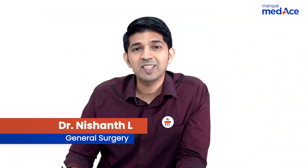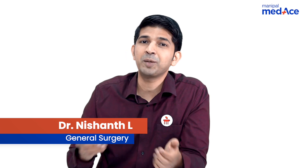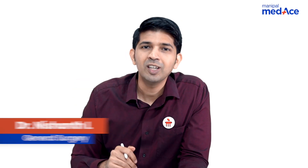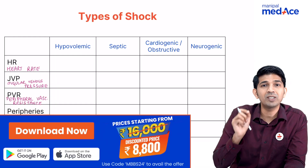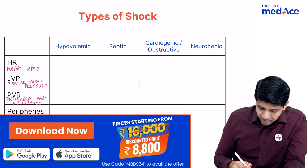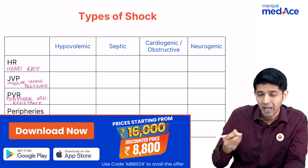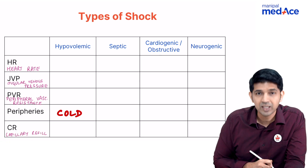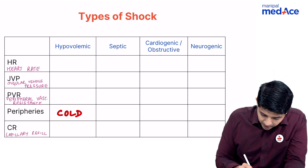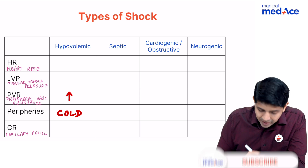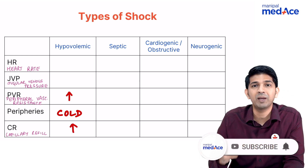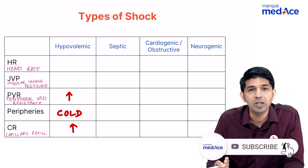Hello everyone, let's learn how to differentiate between the various types of shock. First, let's talk about hypovolemic shock. The key point to remember is that patients with hypovolemic shock will have cold peripheries, which means the peripheral vascular resistance is high and the capillary refill time is prolonged.